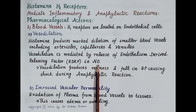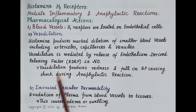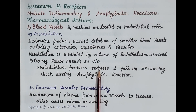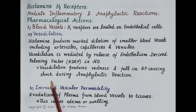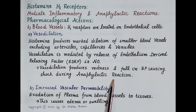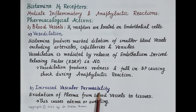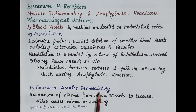Vasodilation causes a local increase in blood flow, producing redness of the skin. Vasodilation also produces a fall in blood pressure. Excessive fall in blood pressure causes shock, which can be fatal and can occur during an anaphylactic reaction.